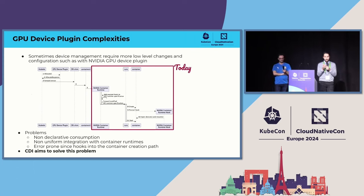Is there a way to natively achieve process prioritization in time slicing, so certain processes get GPU time first? This is not currently possible. You can customize the time quota given to each application during time slicing, but there's no prioritization built in — at any single moment, only one application is running and they all get the same share.